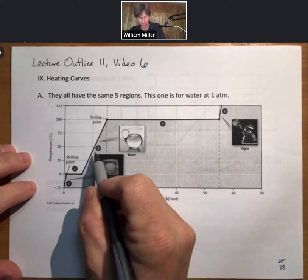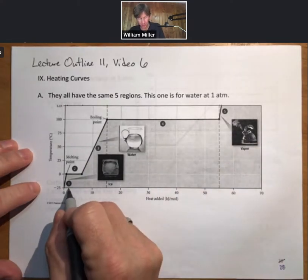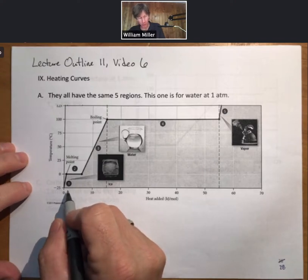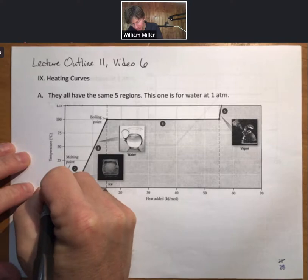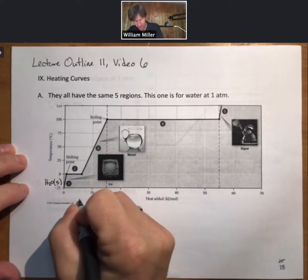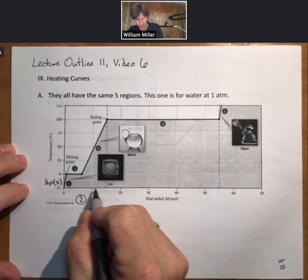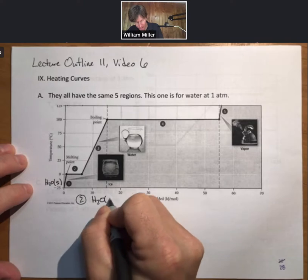And there are one, two, three, four, five regions. Region number one for water is going to be ice, so H2O solid.